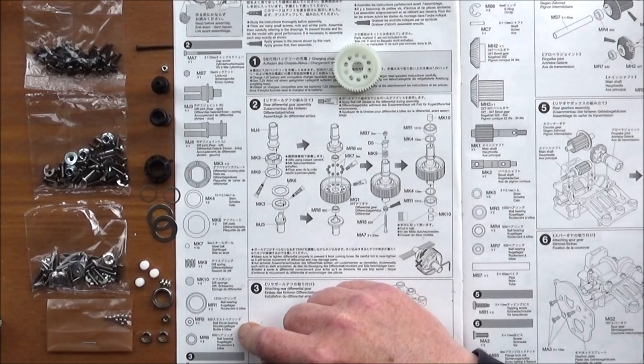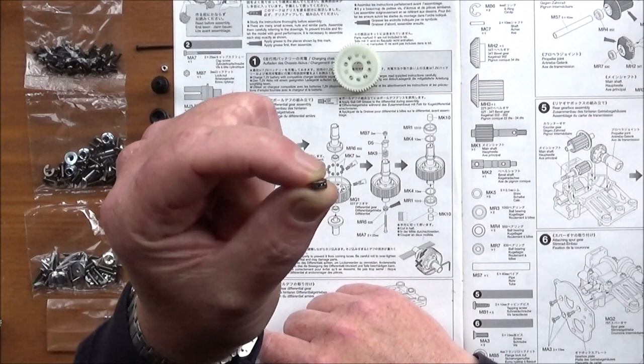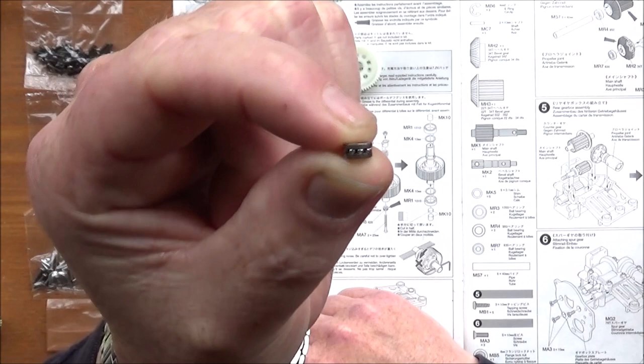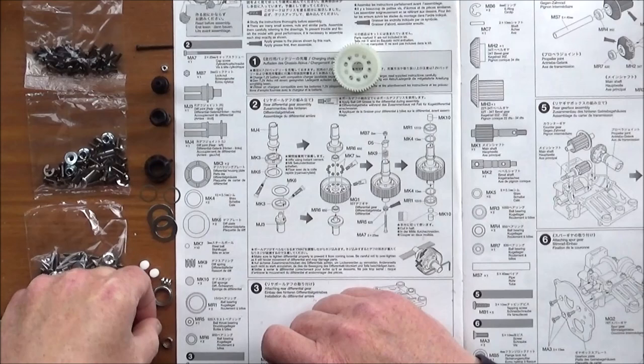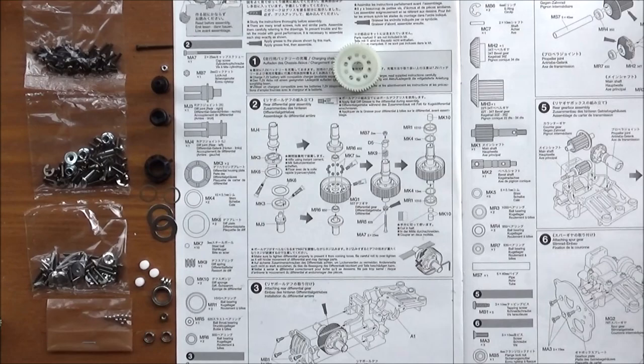One off of MR5, which is the ball thrust bearing that I tried to show you in my unboxing. If I tip it up on its edge and bring it up, perhaps you can see the ball bearings there. So that's the ball thrust bearing. And last but not least, two off of MR6, which are 850 bearings. And with that, we can take a breath and get started.